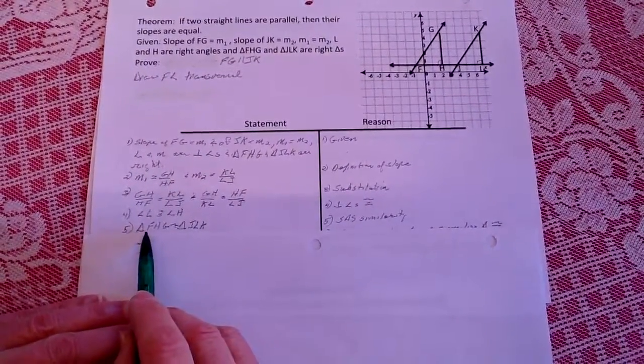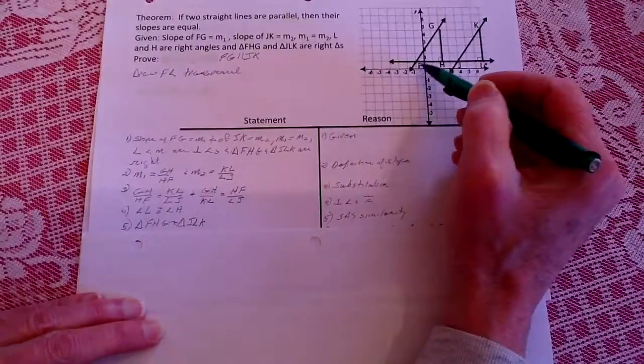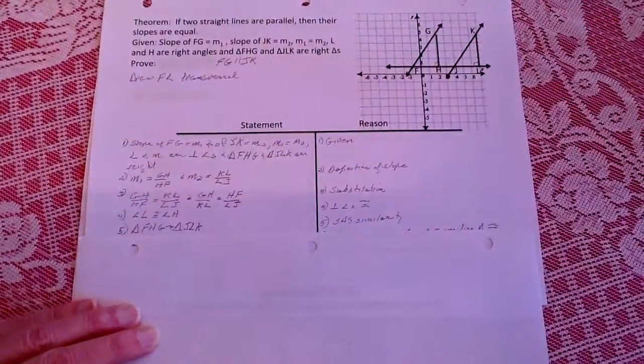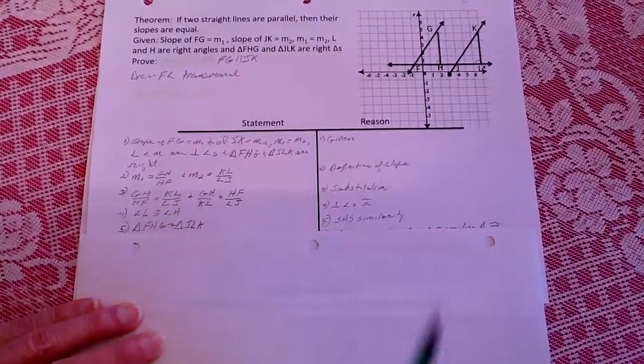And from that, based on the fact that we have the sides now are proportional and we have common angles here, both being perpendicular or congruent, therefore we know that these triangles are similar. So triangle FHG and JLK are similar by side angle side.